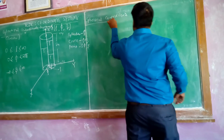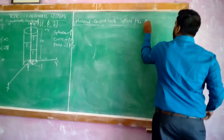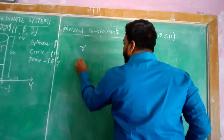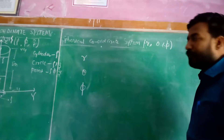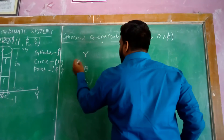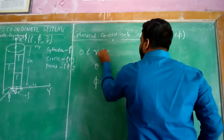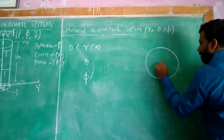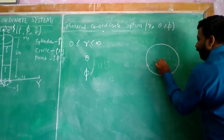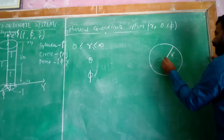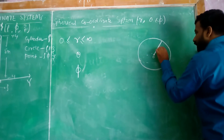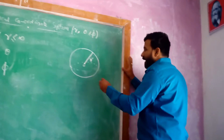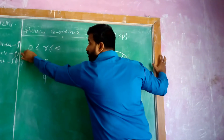Coming to the third coordinate system — the spherical coordinate system. The coordinates are R, theta, and phi. R is the radius of the sphere, which runs from 0 to infinity. The radius is the distance from the origin to the surface of the sphere. A sphere of radius 0 is nothing but a point, and it can be as big as infinity.